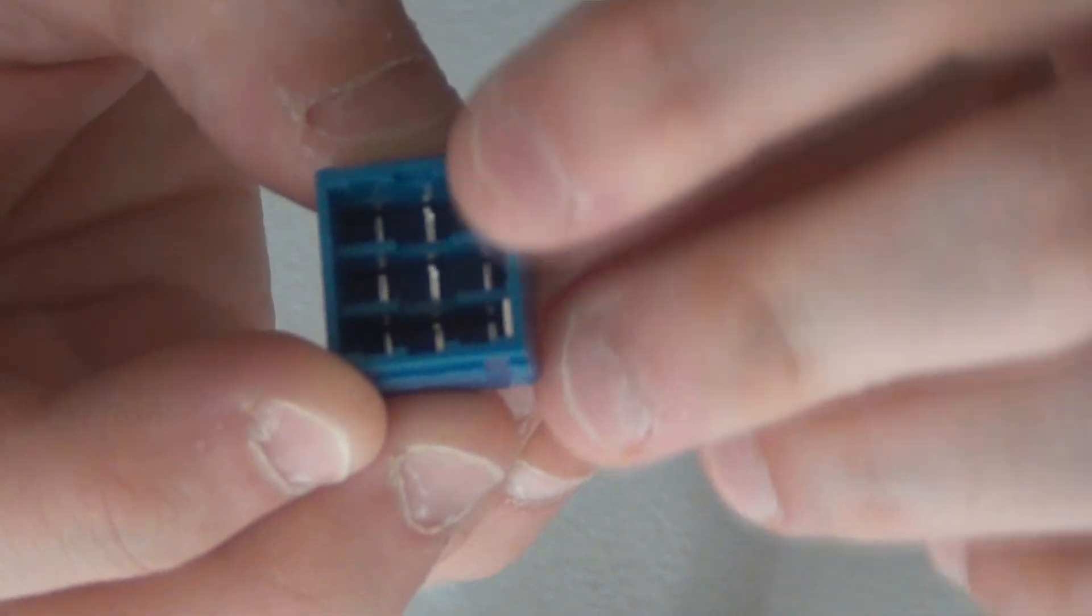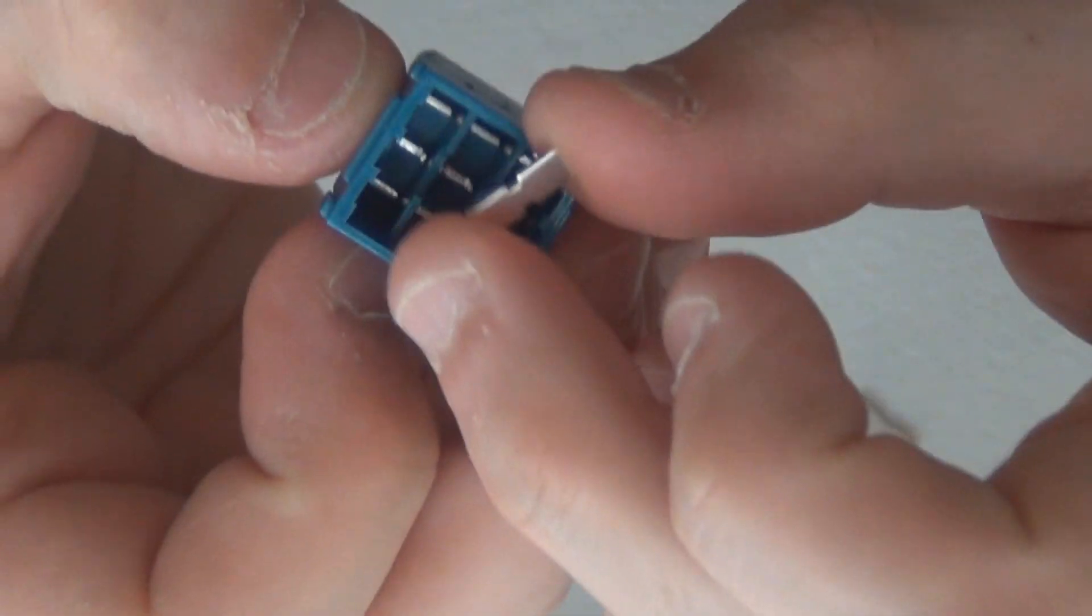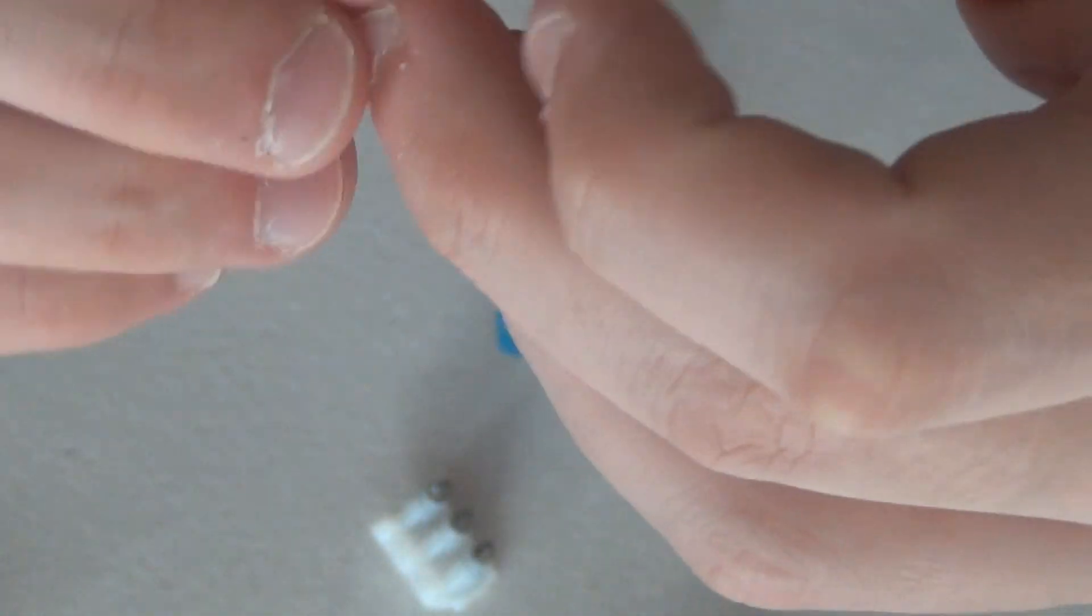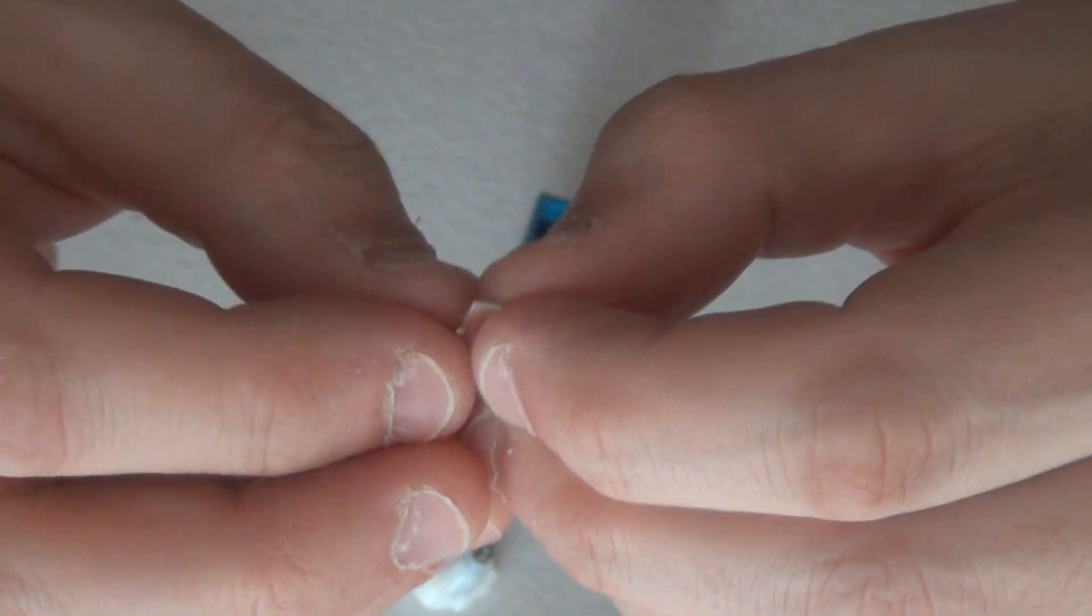So these little contacts sit on the inside here and you can see that the middle contact is up higher than the two outside contacts. So this little contact piece is actually rocking back and forwards as you're pressing the button.